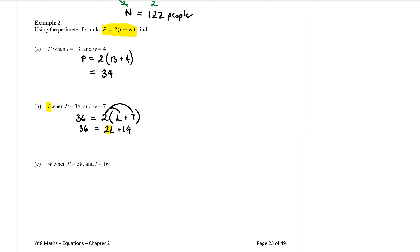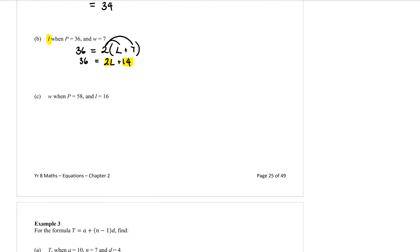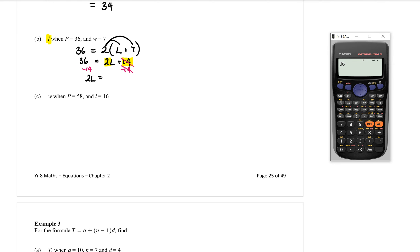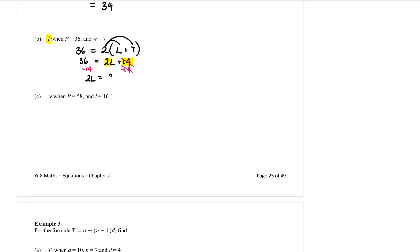Now I have two numbers to move away from l. The first one to go is the 14. Because it's positive 14, I'm going to subtract 14 from both sides — they will disappear. I'm going to switch the 2l to the left side, and 36 take away 14 is 22. Now I want to get rid of the 2 — it's multiplied with the l, so I divide by 2. Cancel that off. L is now by itself, and 22 divided by 2 is 11.